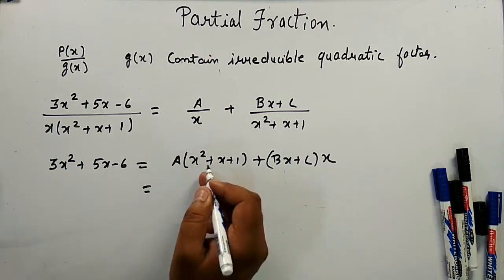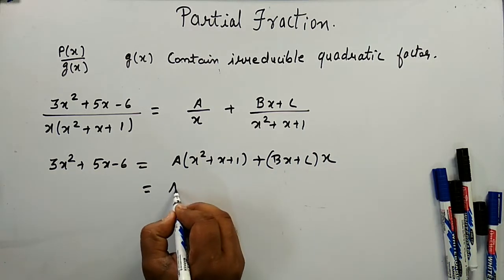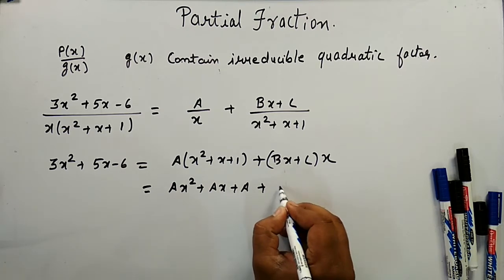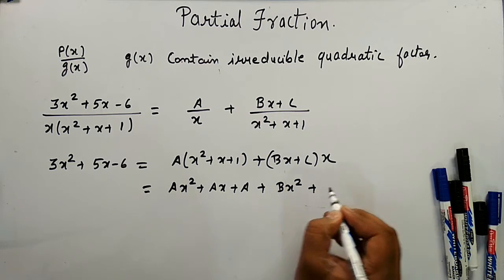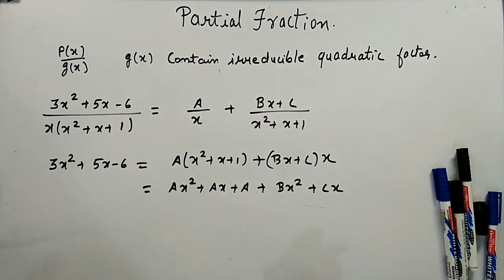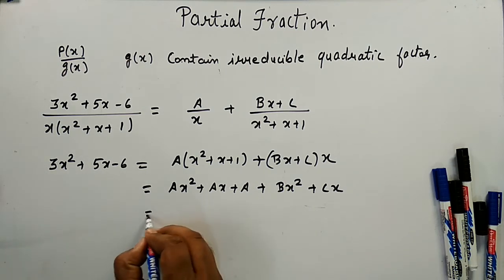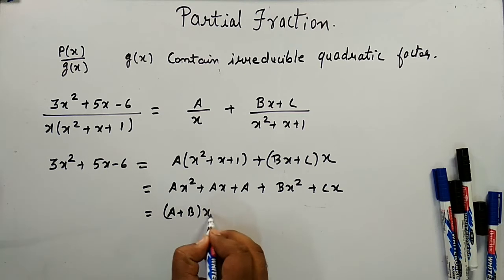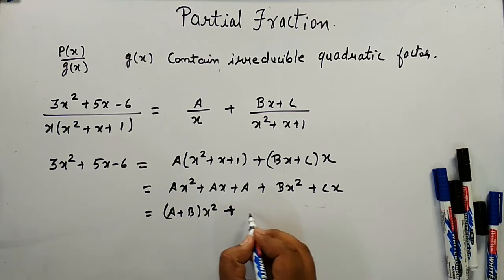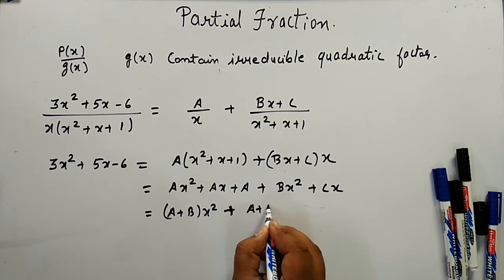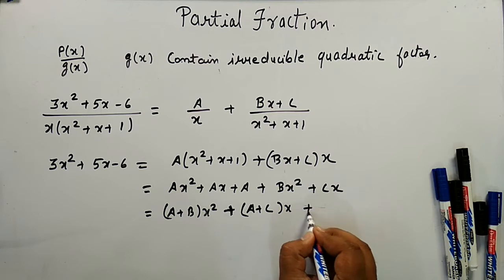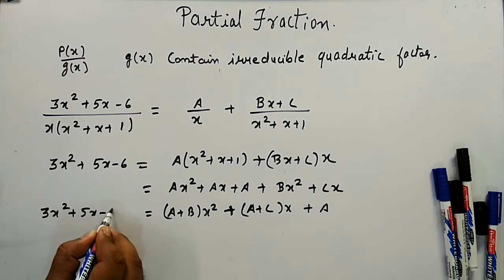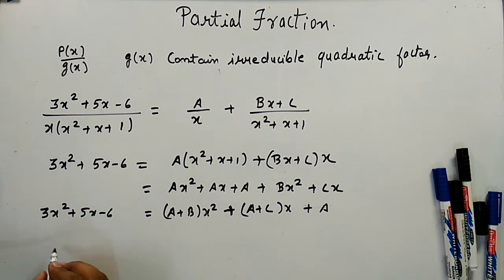Multiplying through, we get Ax² + Ax + A + Bx² + Cx. Taking coefficients: (A + B) for x², (A + C) for x, and A as the constant term. This equals 3x² + 5x - 6.